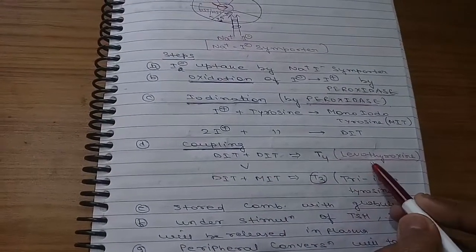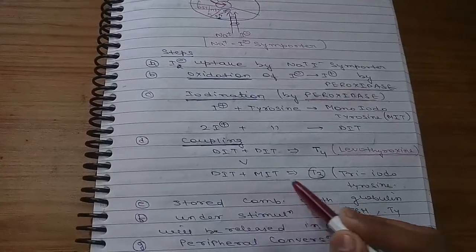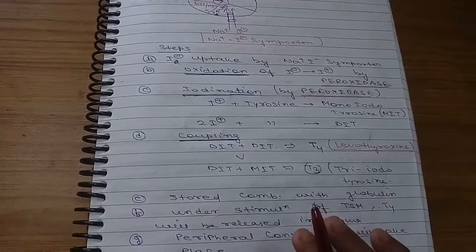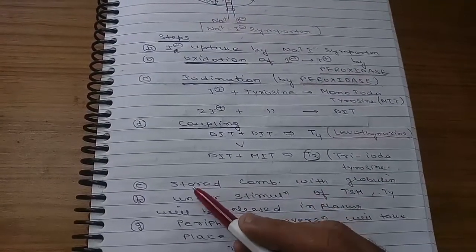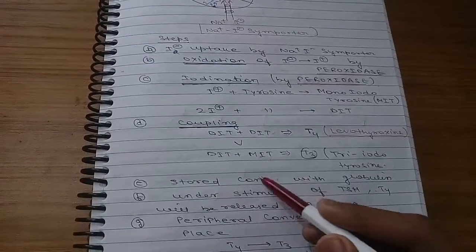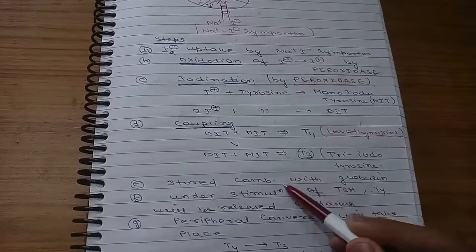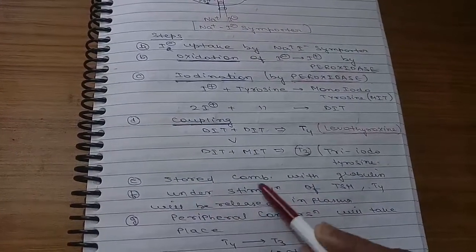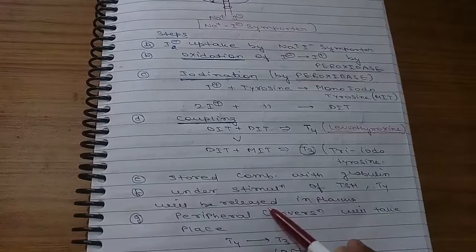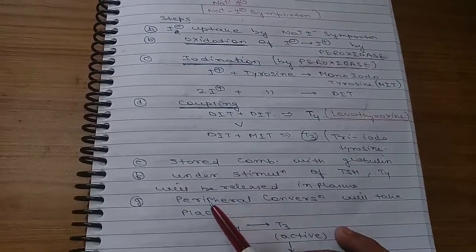DIT may combine with MIT to form T3, which is triiodothyronine. The fifth step is storage. This is stored in combination with globulin. Thyroxine will be stored in combination with globulin. Next, under stimulation of TSH, T4 will be released into plasma.